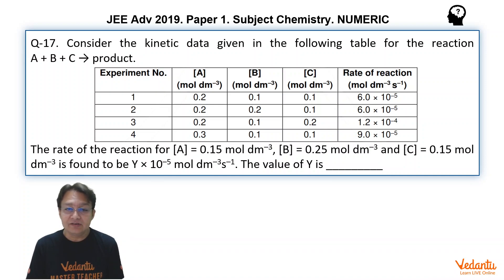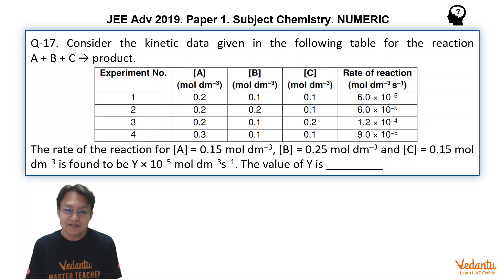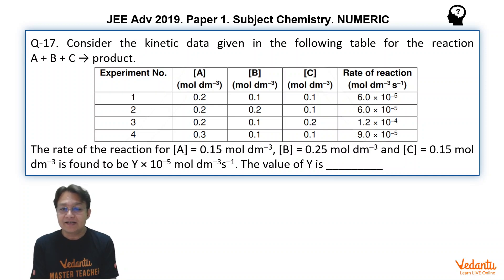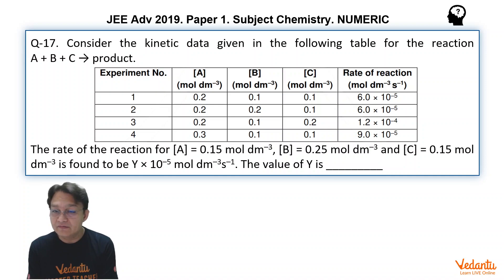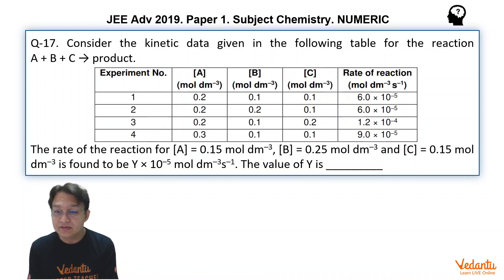Similarly, if we see the third data, A is 0.2, B is 0.1, C is 0.2, and we compare it to experiment 1, we can find that the concentration of C has been doubled. As a result, the rate becomes 1.2 into 10 to the power of minus 4, which is 12 into 10 to the power of minus 5 — it is doubled.